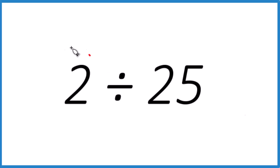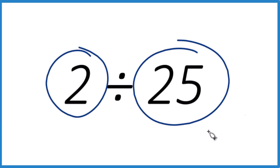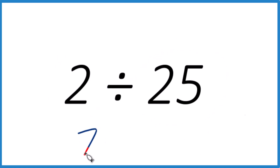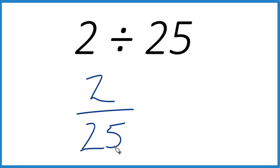This is Dr. B. We're going to divide 2 by 25 using long division. The way I like to think about this is 2 over 25, same thing as 2 divided by 25 — we want to see how many times 25 goes into 2. And since 2 is smaller, we're going to get a decimal, a pretty small number.